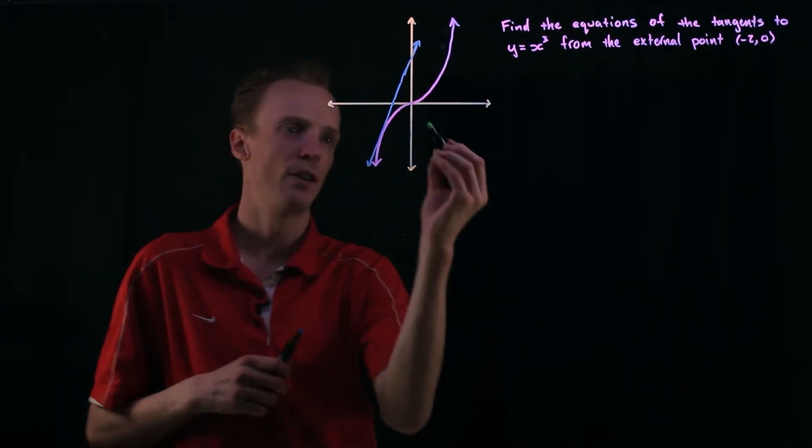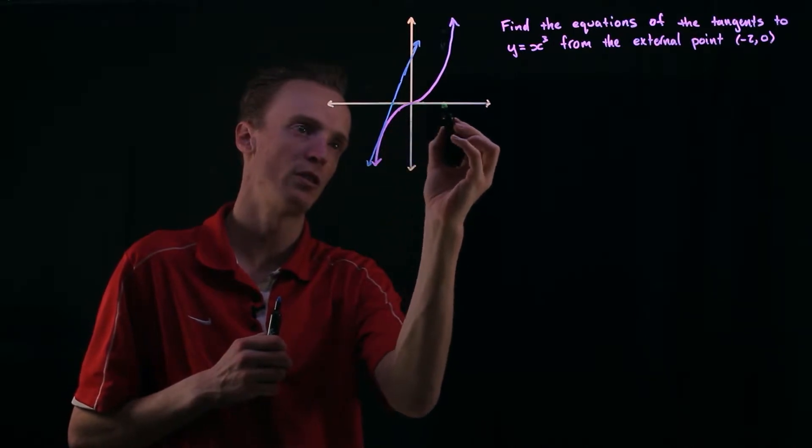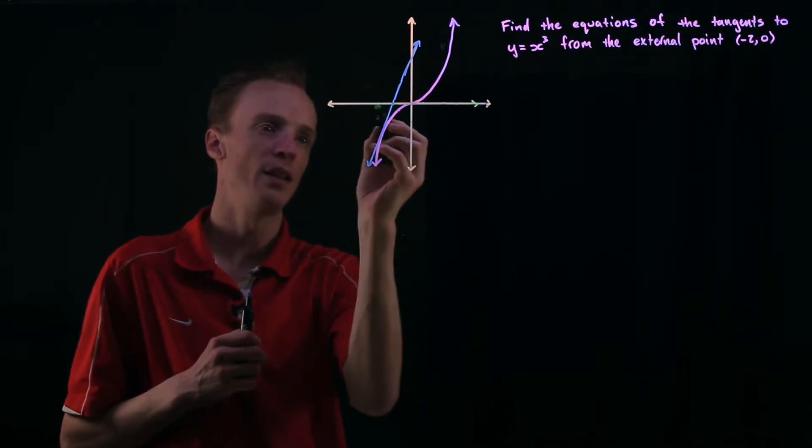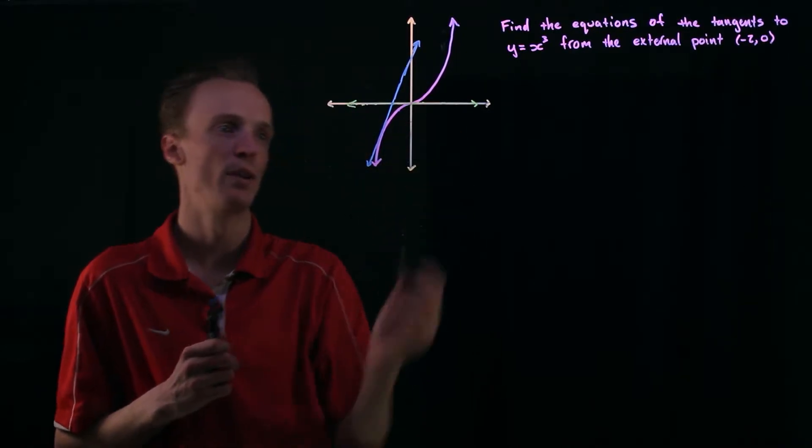But there's actually another one with this function and I actually know where it is. It's the one that runs just along here. At this point here that'll actually have a tangent to the line at this point just in here.